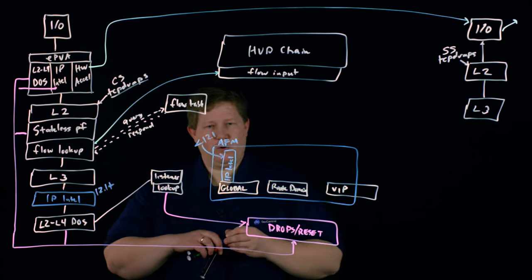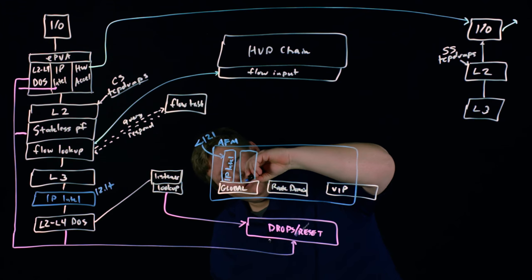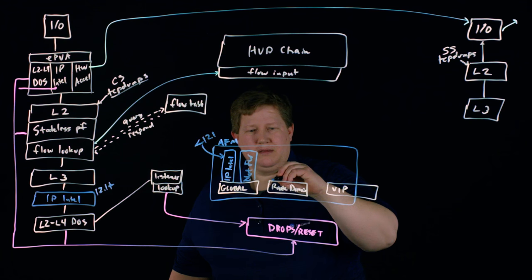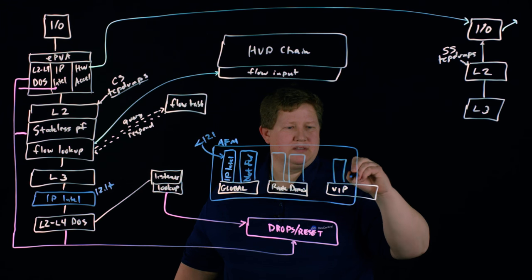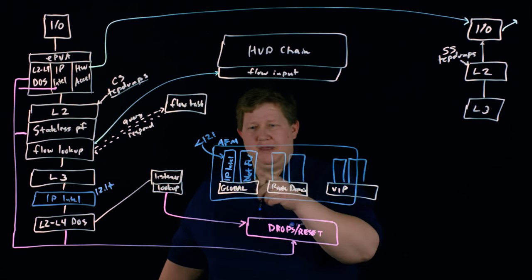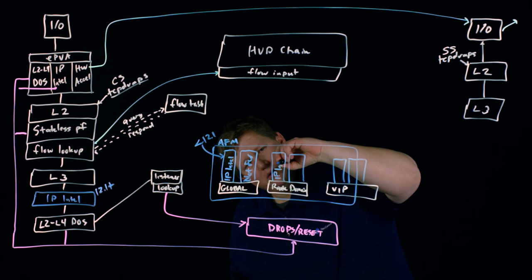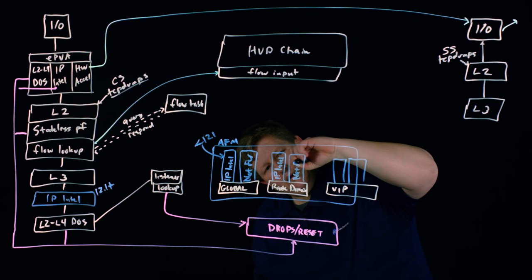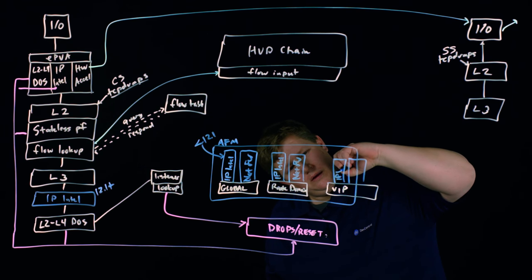We also have the network firewall. We draw that in — net firewall — and then we have those same two blocks for the virtual server as well: IP intelligence remains in all versions, and then your net firewall. We have an accept from the listener and feed over to the global context. If there is a match in there, that'll be a discard. Discard here, discard there — but assuming we make our way through this stack to the VIP, we proceed.